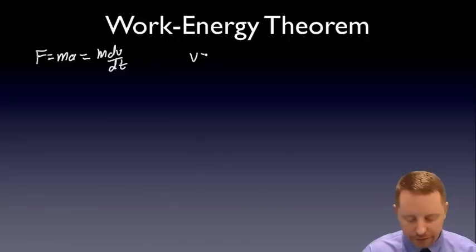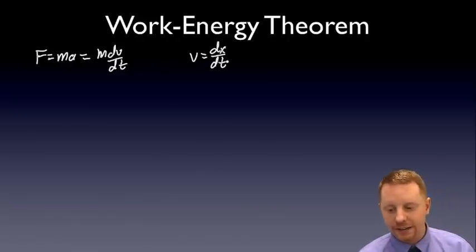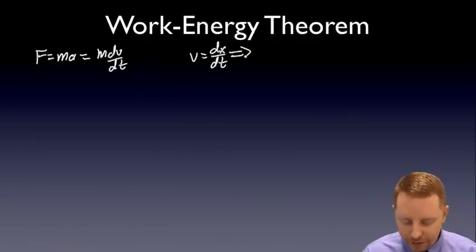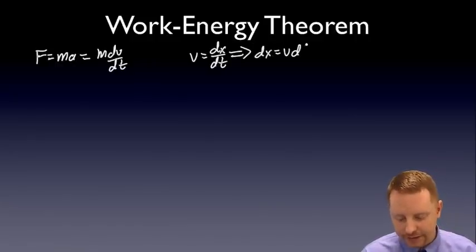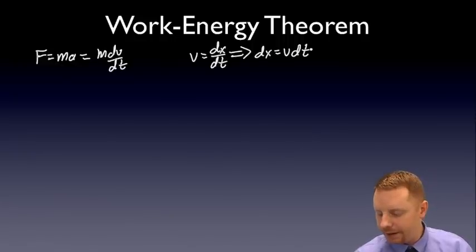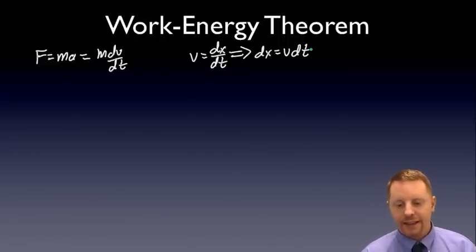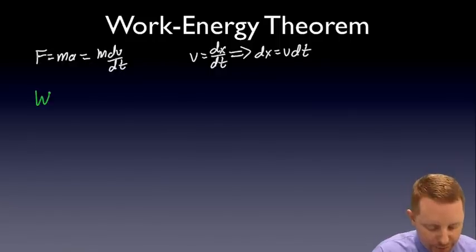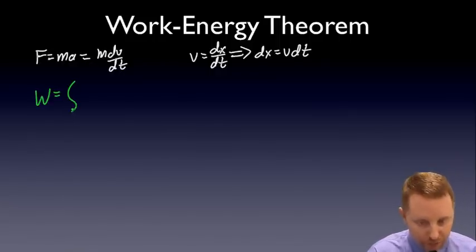I also know that velocity is the derivative of position, v equals dx dt. So if I rearrange this, I can say that dx equals v dt. That's going to be my starting point.